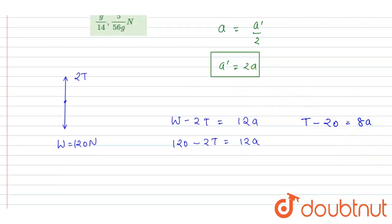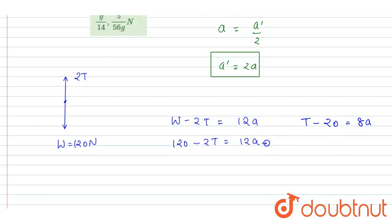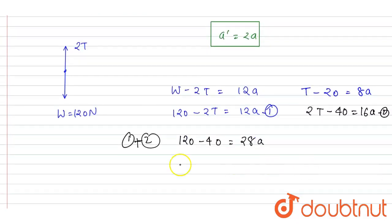Since a dash is 2 times a, I replace a dash by 2a, giving T minus 20 equals 8a (Equation 1). We want tension as well as acceleration. Multiply Equation 1 by 2, then add the two equations. Adding gives: 120 minus 40 equals 12 plus 16, so 80 equals 28a.